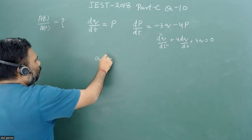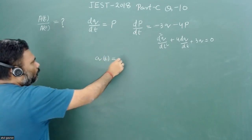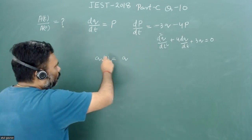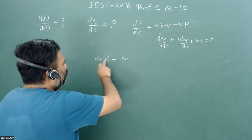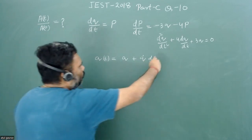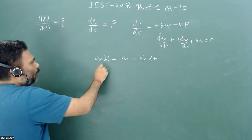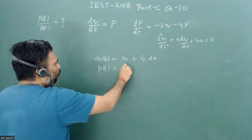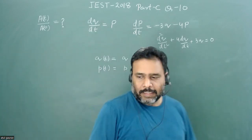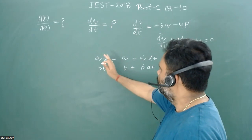Let's consider how the generalized coordinate q varies with time. For the one-dimensional case: q(t) = q + q̇·dt. Similarly for p: p(t) = p + ṗ·dt. Any physical coordinate under the phase curve — q and p — evolves with time in this manner.